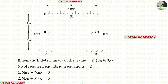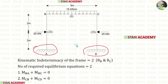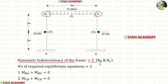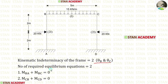Let us find the kinematic indeterminacy. We have to check the supports and the joints. At points A and D there are fixed supports, where there will be no deflection and no slope. There are two joints, joint B and joint C, where beam and columns are connected. Since this is a non-sway type frame there will be no deflection at the joints, but there will be slope. So the kinematic indeterminacy of the frame is 2. At joint B we have slope θB and at joint C we have slope θC.